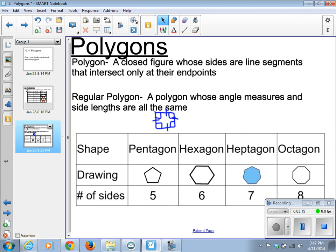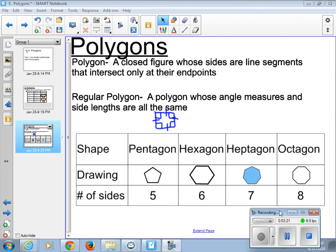And finally, an octagon. Eight sides. You've all seen this on a stop sign. This concludes your lesson on polygons.